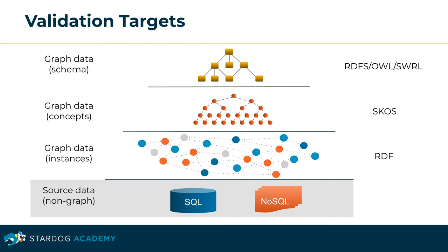In the following, I'll present four kinds of prominent targets for validation to inspire your critical review. The source data comprises any non-graph data accessed via Stardoc's virtualization layer. The bulk of the graph data are descriptions of individual resources — the instances of a schema. The schema defines the resource types along with applicable attributes and relationships. Concepts are similar resources often organized in a hierarchical structure with or shape characteristics of instance data and schemas.